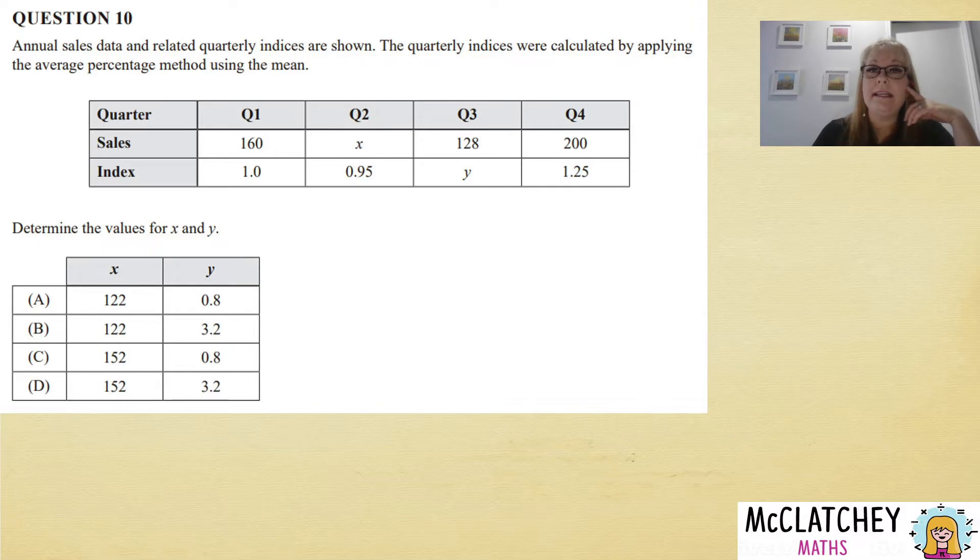The quarterly indices were calculated by applying the average percentage method using the mean. Determine the values for x and y. So we've got a missing sales value and a missing index for quarter 3. Being able to solve this question means that you need to understand where the sales indexes have come from and what they actually mean.